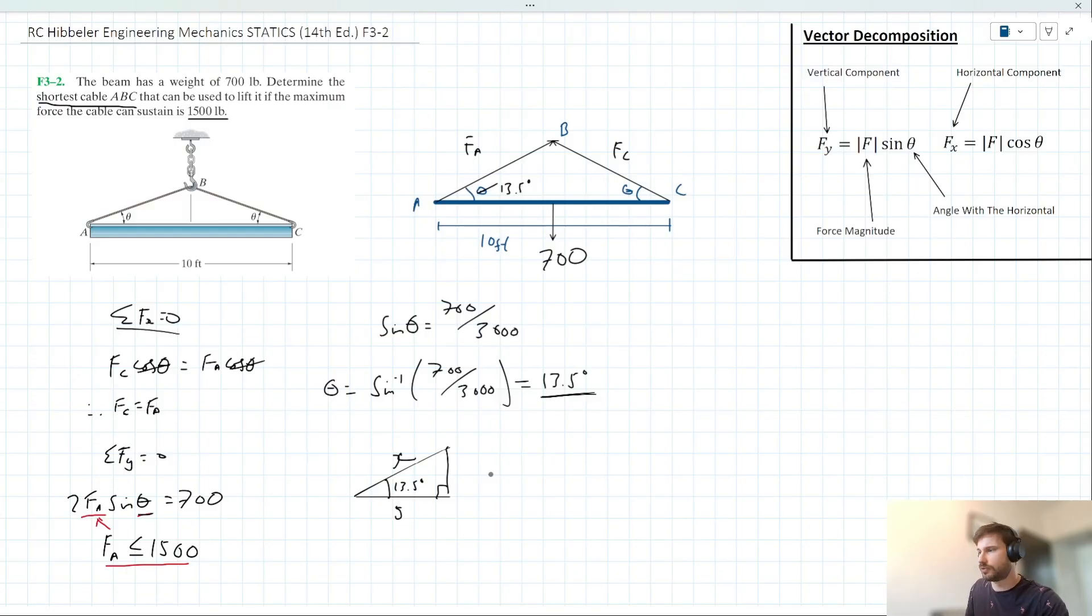Evidently, this is a very simple trigonometry problem. So we have our adjacent, we are looking for our hypotenuse. The best trigonometric ratio to use here, then, should be cos.